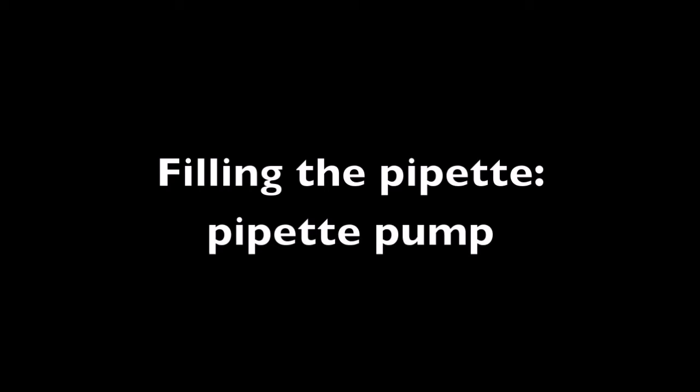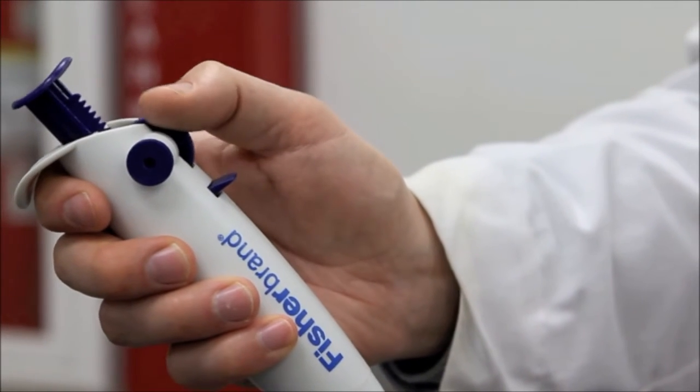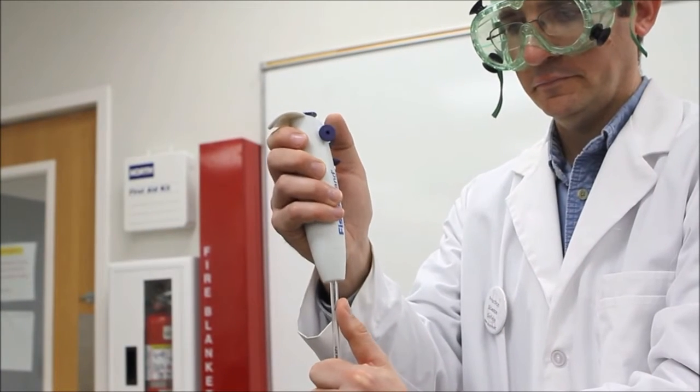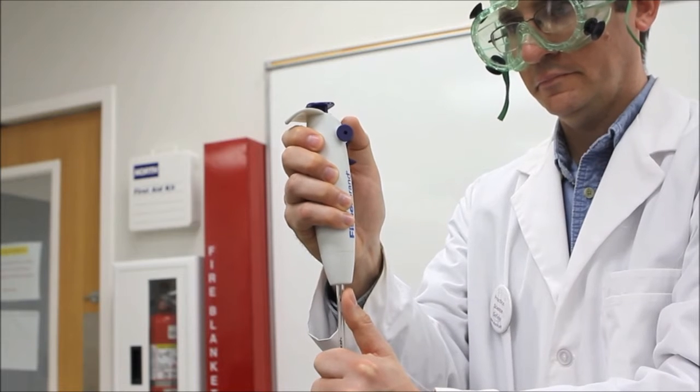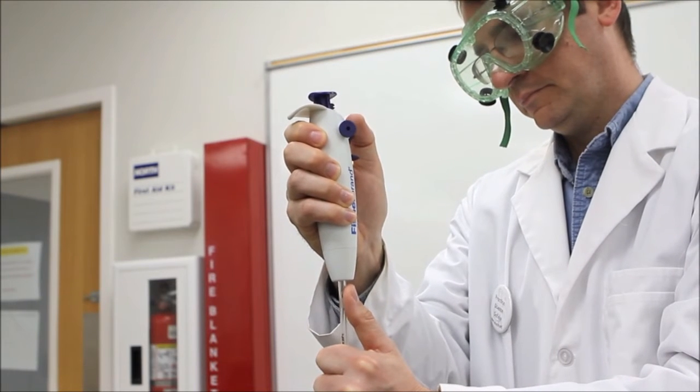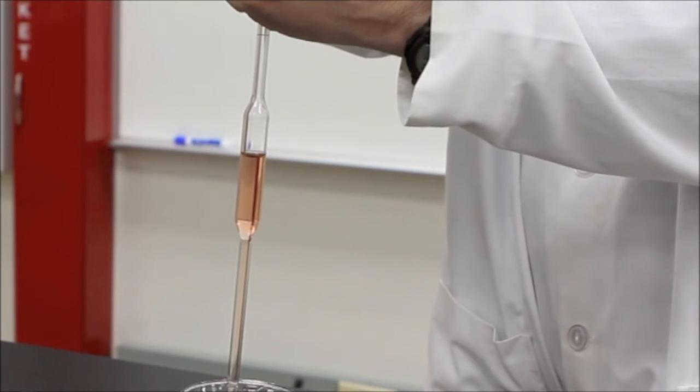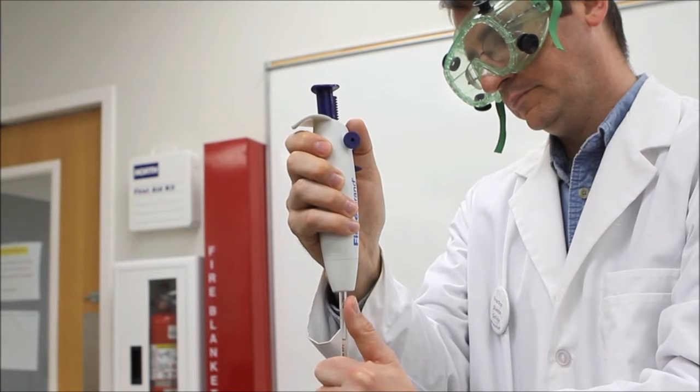The first of two common suction devices used in our labs to fill the pipette is the pipette pump. Turning its wheel moves the piston up, providing controlled suction of the liquid into the pipette. With the pipette pump snugly fitted to the mouth of the pipette and its tip immersed in a container of your solution, slowly turn the wheel, progressively filling the pipette until the liquid level is an inch or two above the etch mark, but well below the mouth of the pipette.